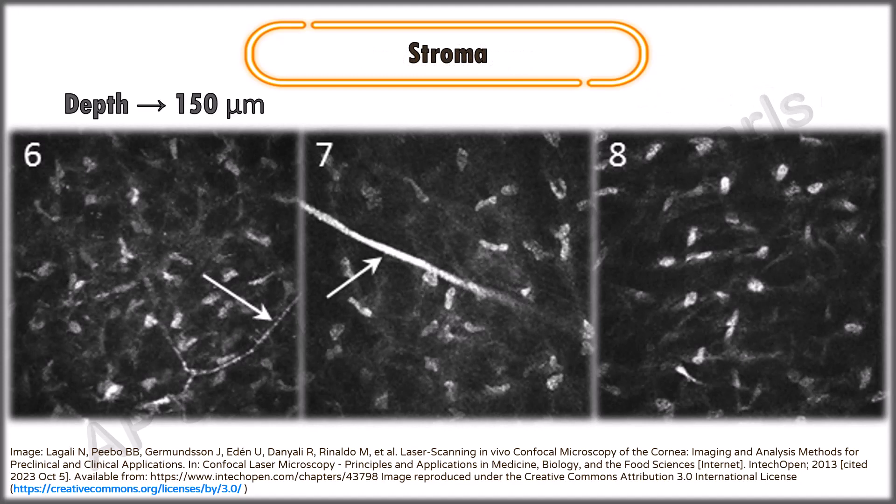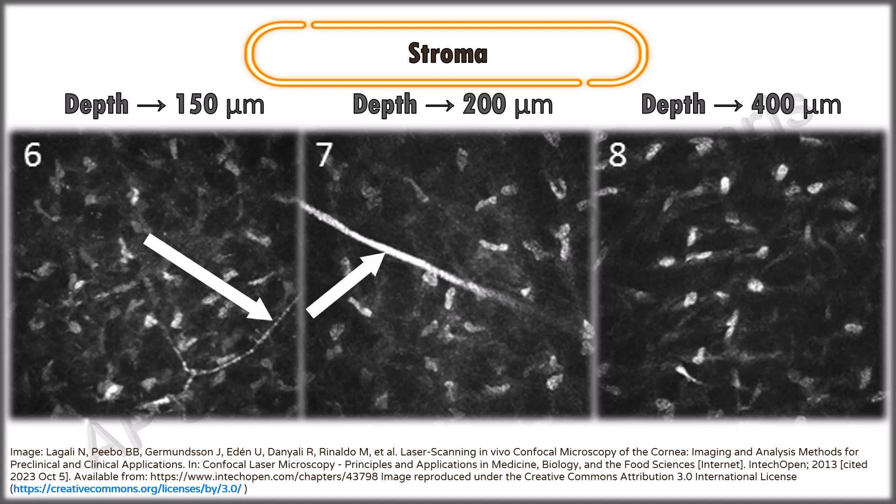These are pictures of the anterior, mid and posterior stroma. A greater cell density is seen in the anterior stroma. Stromal keratocytes appear as hyper-reflective nuclei with poorly visualized cell processes in normal individuals. These cell processes become more prominent in corneal edema and after wound healing. Stromal nerves are thicker than those of the sub-basal plexus.